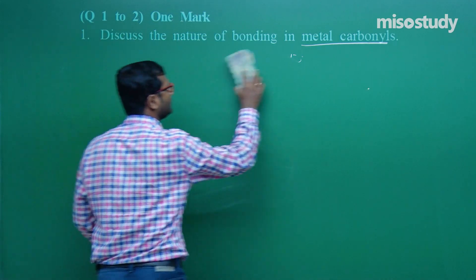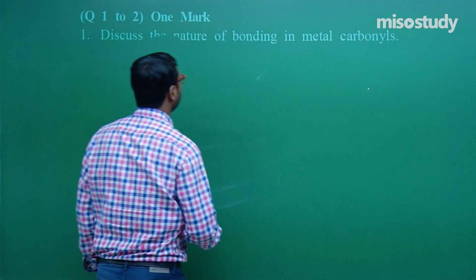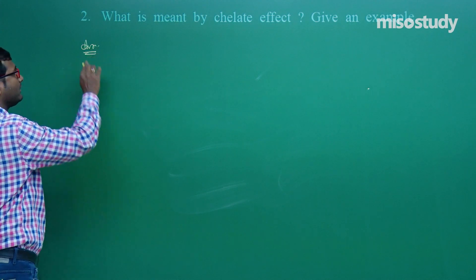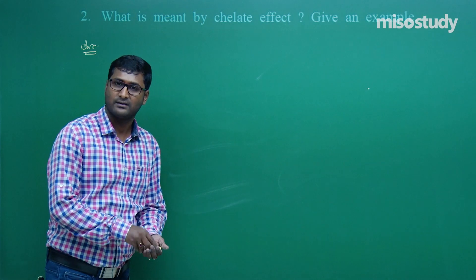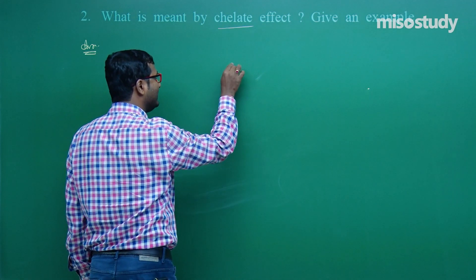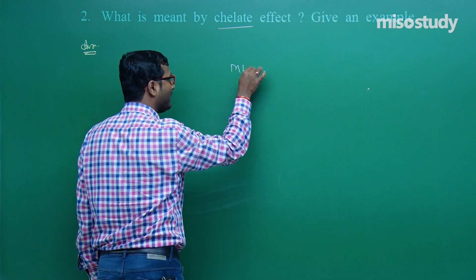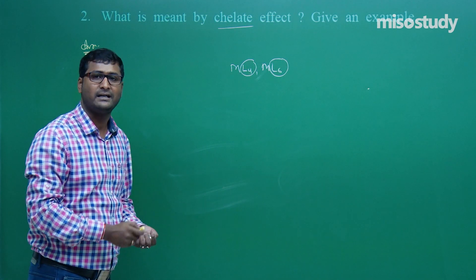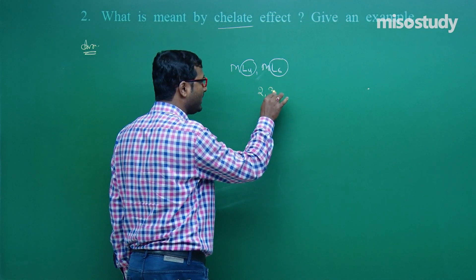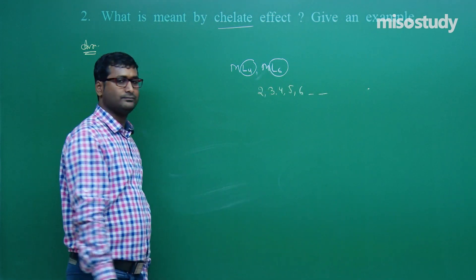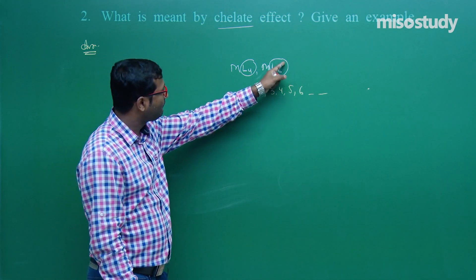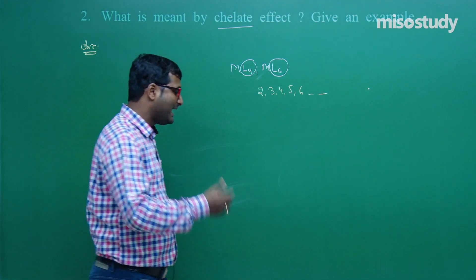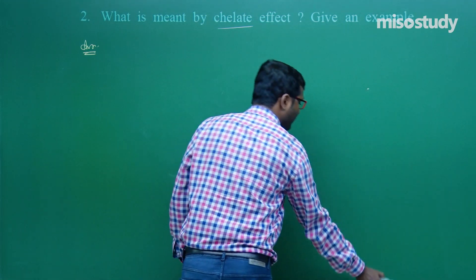The next question: What is meant by the chelate effect? As we know, if there is a ligand — the formula of a complex may be ML4, ML6, etc. If the ligand attached to the metal is a polydentate ligand, the denticity may be 2, 3, 4, 5, or 6. And if it forms a ring around the metal, then this type of effect is known as the chelate effect, and it increases the stability of the coordination compound.